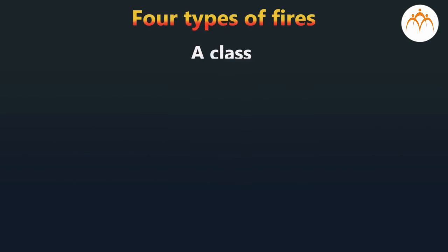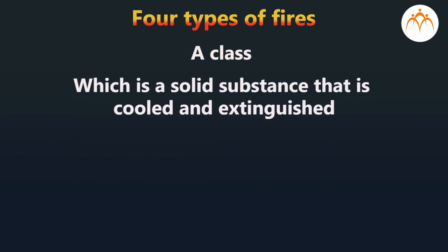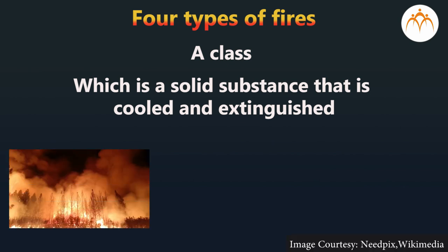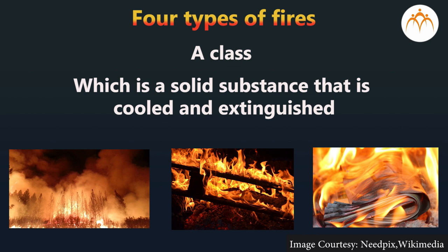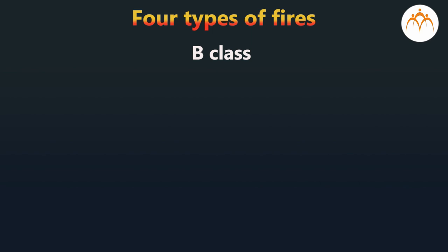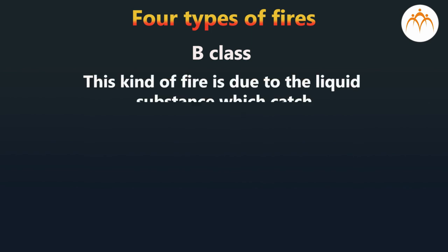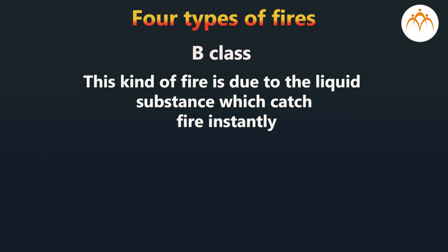The first is Class A fire, which involves solid substances that are cooled and extinguished. This includes fire from wood, clothing, and paper. The second type of fire is called Type B fire. This kind of fire is due to liquid substances which can catch fire instantly.